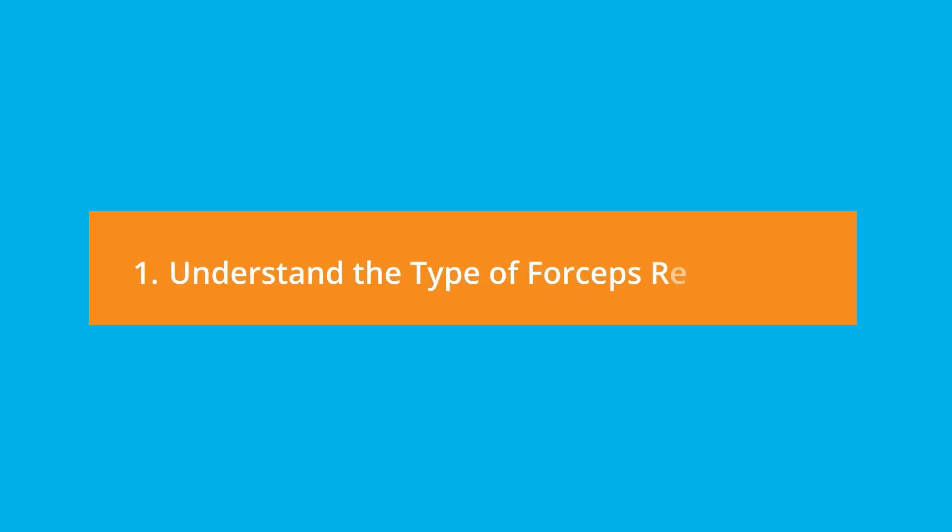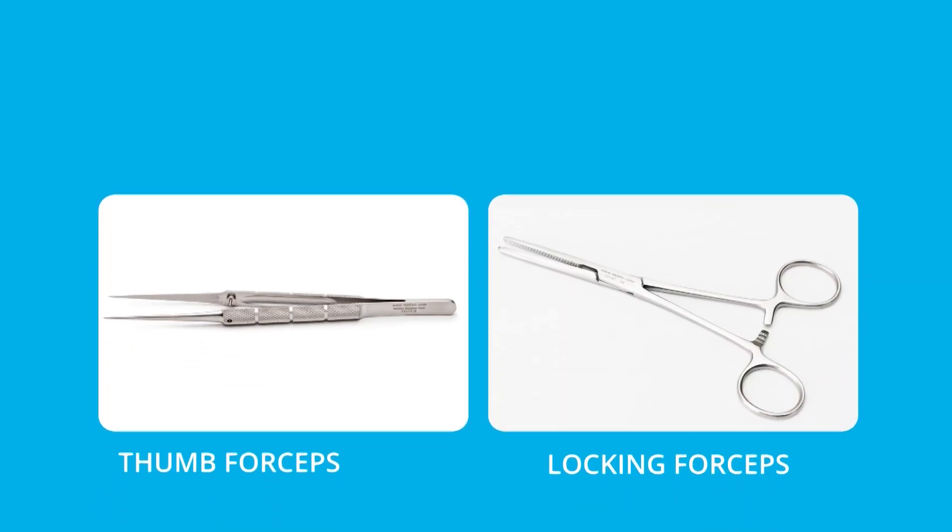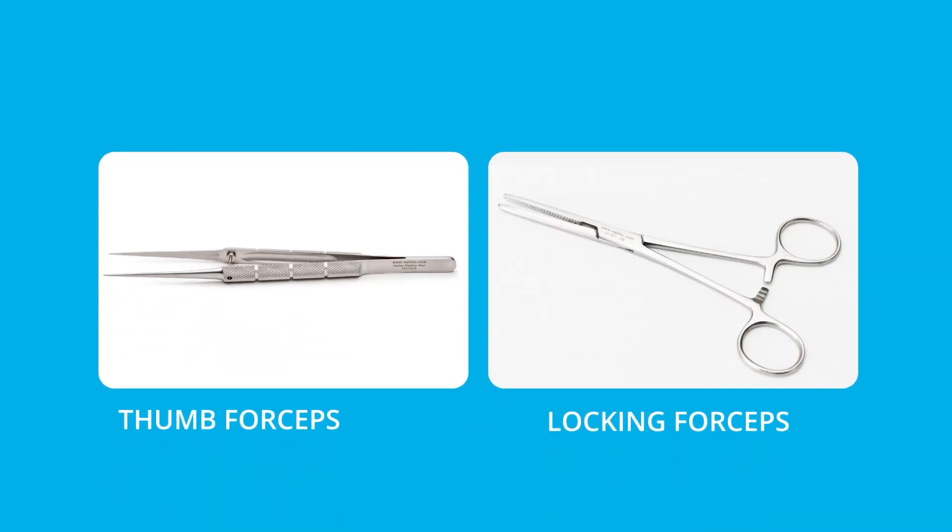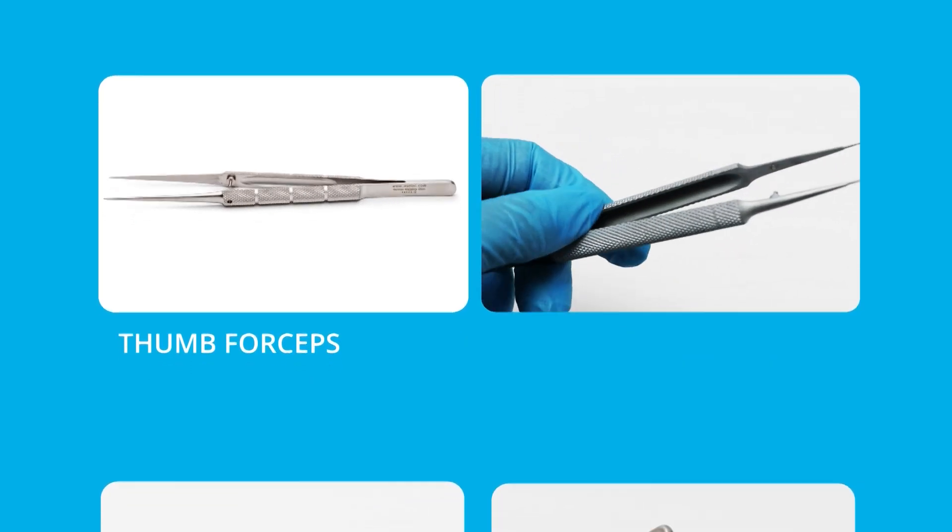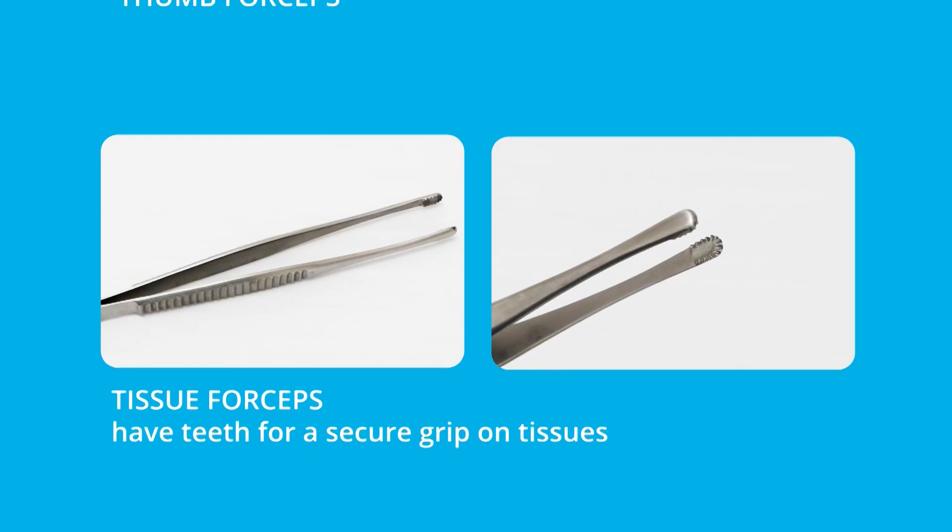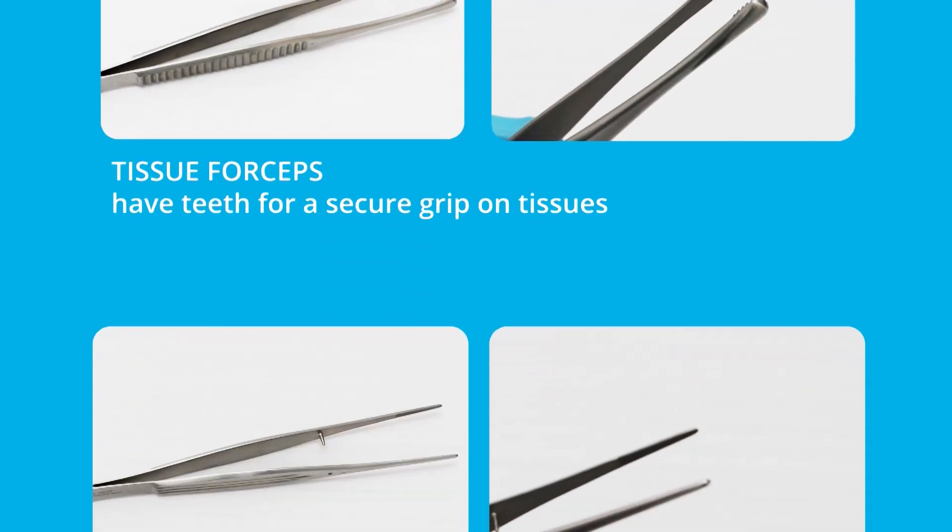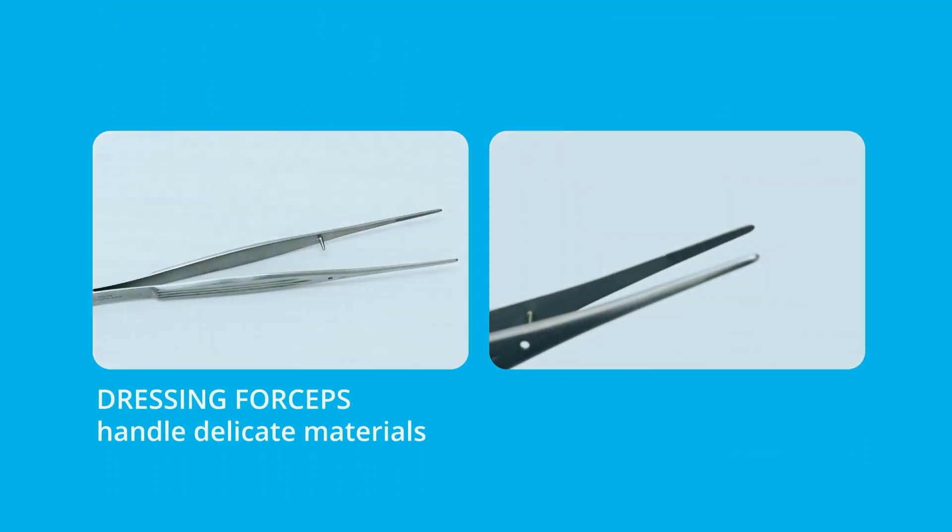First, understand the type of forceps required. Surgical forceps are categorized into thumb forceps and locking forceps. Thumb forceps, both tissue and dressing forceps, are used for fine manipulations. Tissue forceps have teeth for a secure grip on tissues, while dressing forceps handle delicate materials.